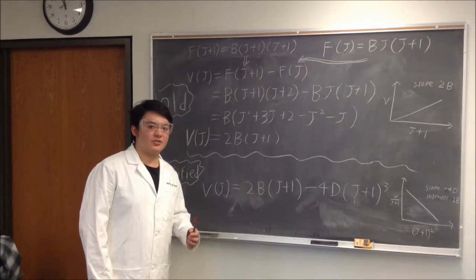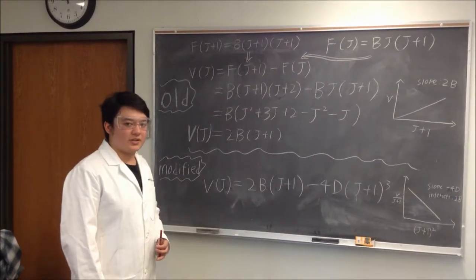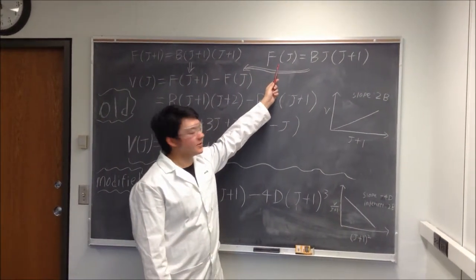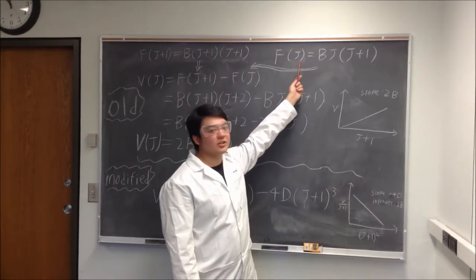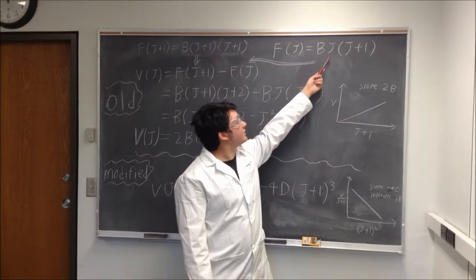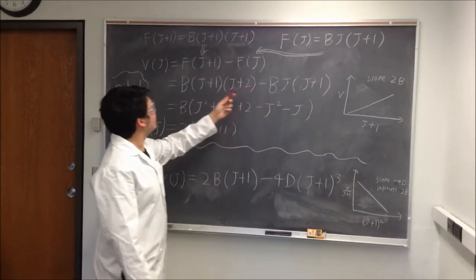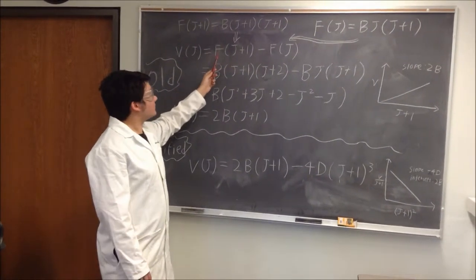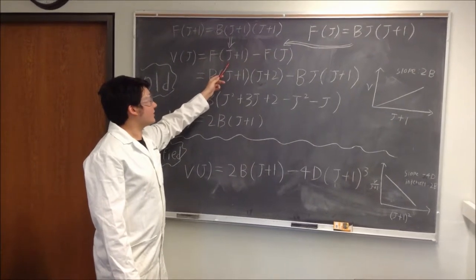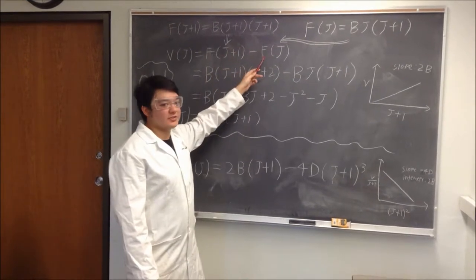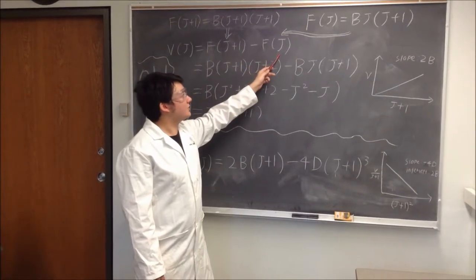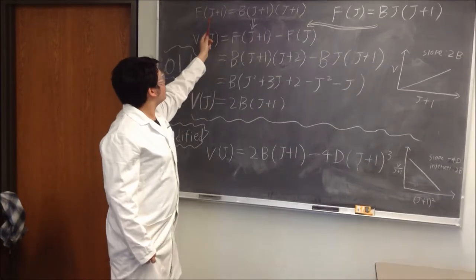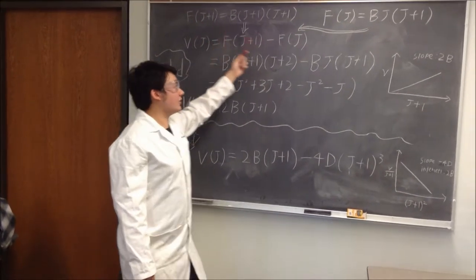We can also observe the strongest transition in terms of the transitional frequency using the rotational term constant. Observe here that this is the equation for the rotational term constant in terms of J, which is B times J multiplied by J plus 1. Note that the strongest transition is going to be the rotational term value as a function of J plus 1, minus the rotational term value as a function of J.